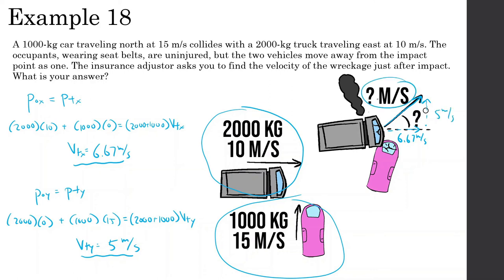Now let's find the combined velocity. Using the Pythagorean theorem: square root of (5 squared plus 6.67 squared) gives a speed of 8.34 m/s. The angle is inverse tan of (5 / 6.67), which gives 36.86 degrees.